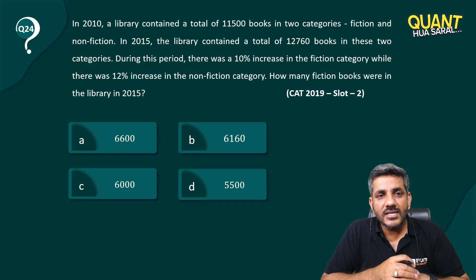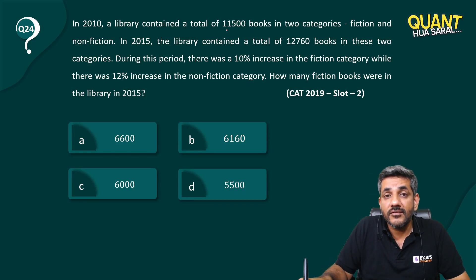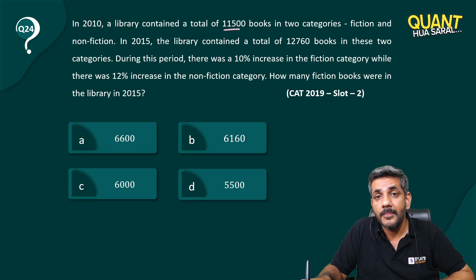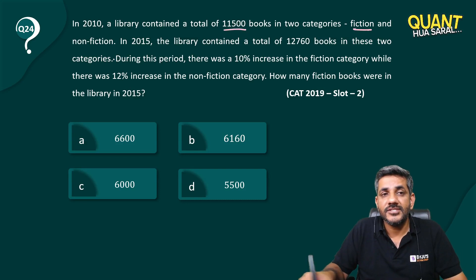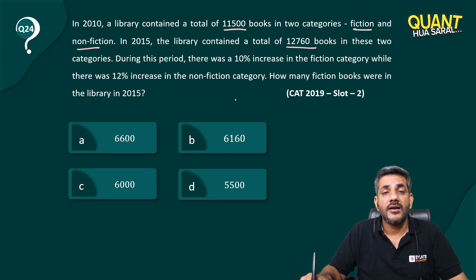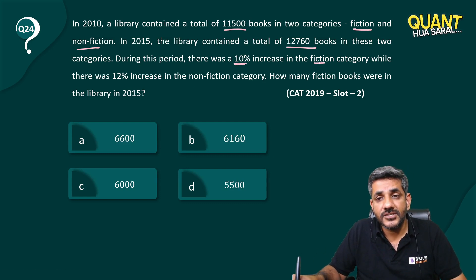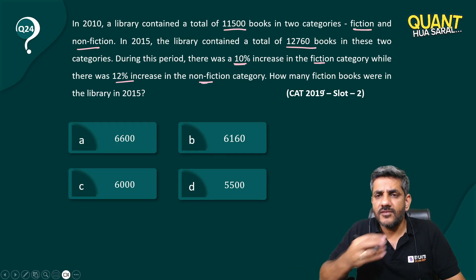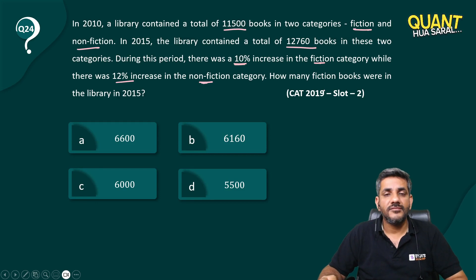In 2010, a library contained a total of 11,500 books in two categories, that is fiction and non-fiction. In 2015, the library contained a total of 12,760 books in these two categories. During this period, there was 10% increase in fiction while 12% increase in non-fiction. How many fiction books were there in the library in 2015?